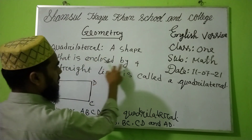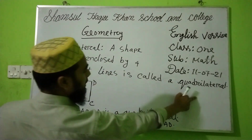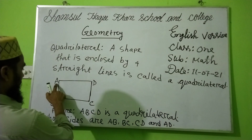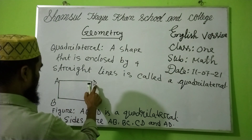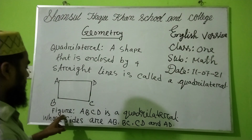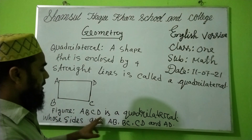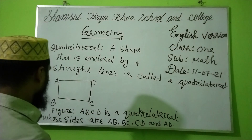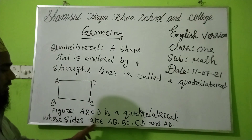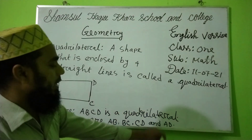A shape that is enclosed by four straight lines is called a quadrilateral. Here, figure A, B, C, D is a quadrilateral whose sides are AB, BC, CD, and AD.